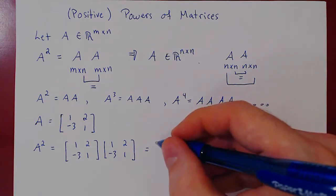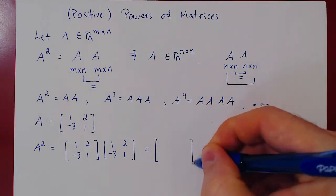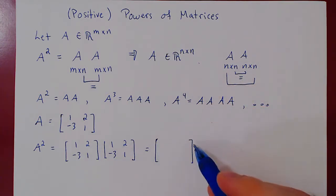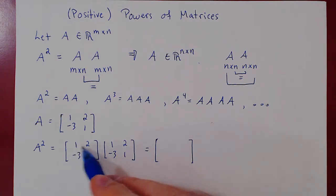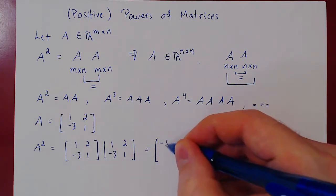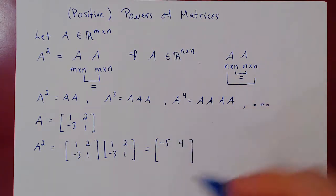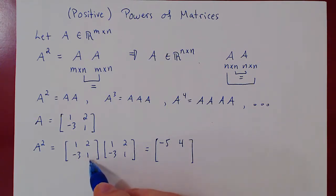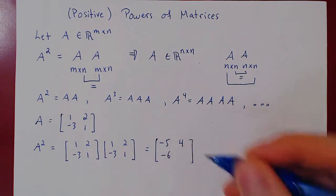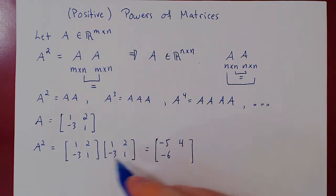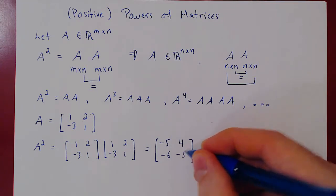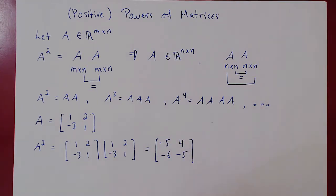So now we have a squared. So first row, fix the first row of a. So 1 times 1, 1, plus minus 6, negative 5. 1 times 2, 2, plus 2 times 1, 2, 2 plus 2 is 4. Second row, fix the second row of the first matrix. Negative 3 plus negative 3, negative 6. Negative 6 plus 1, negative 5. And so we have a squared.